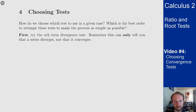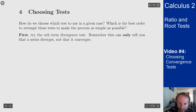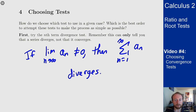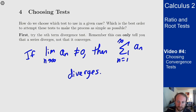Your first thing to think about should be the nth-term divergence test. If nothing else works well, this might tell you the series diverges. The idea is that if the terms don't go to zero, the series must diverge. The main point to remember is that this can never tell you a series converges — it only tells you it diverges if the terms don't go to zero. It's a one-directional statement. 'Converges by the nth-term divergence test' does not exist.